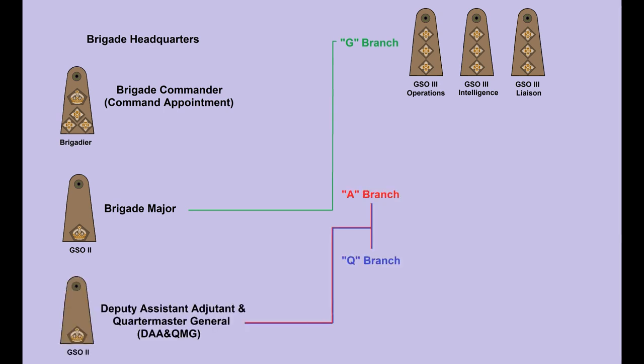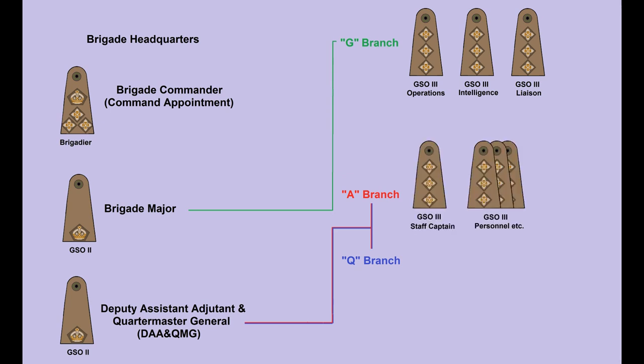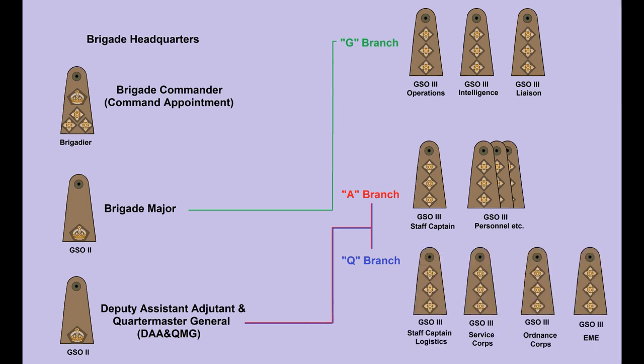Another Major, known as the Deputy Assistant Adjutant and Quartermaster General, coordinated the work of the A and Q Branches. The A Branch had a Staff Captain and a number of GSO-3 to handle personnel matters, such as administration, honors and awards, postings, promotions, medical, dental, and auxiliary services such as sports and recreation. The Q Branch Staff Captain handled logistics, including supply, transport, clothing, equipment, maintenance, and ammunition.